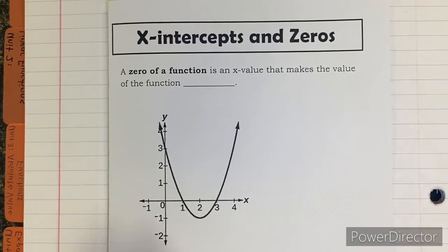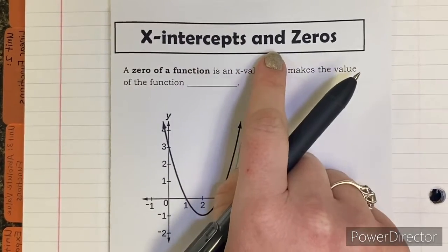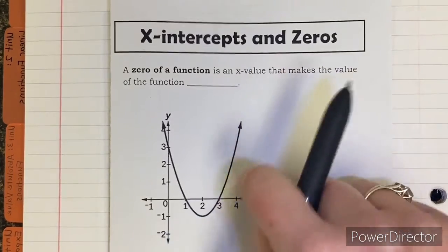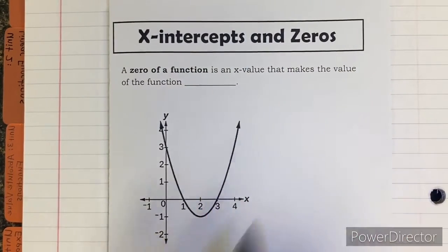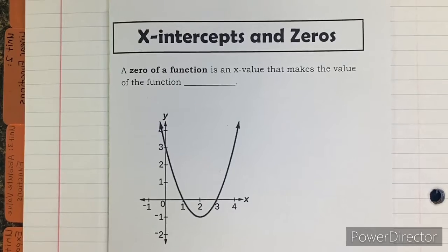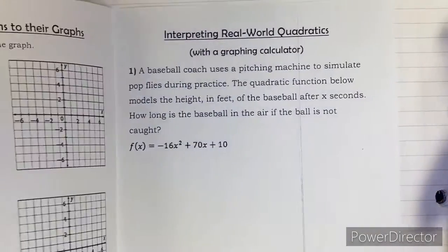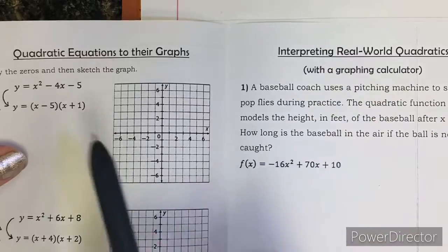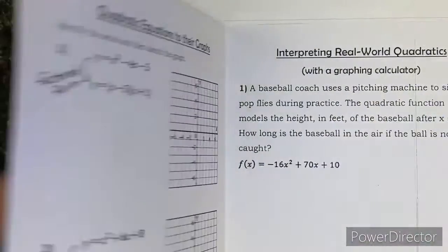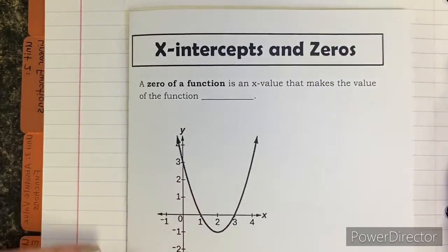I want to explain why we are doing these notes. We have talked about X-Intercepts and Zeros — it's all about where does the graph cross the X-axis. What we haven't done is connect the graph to the equation. On the inside of this foldable, we're going to be looking at the equations and the graphs. That's the whole goal of this foldable.